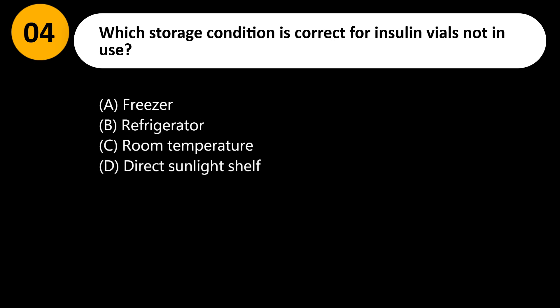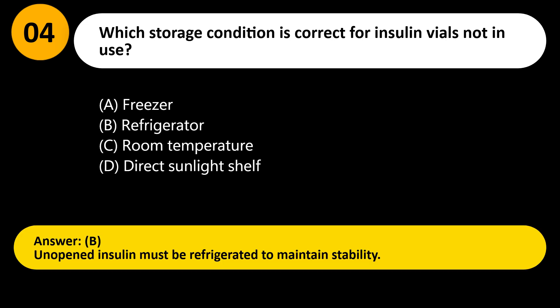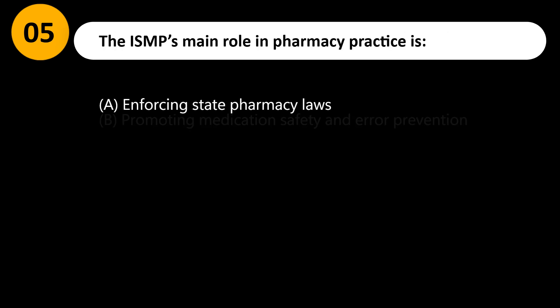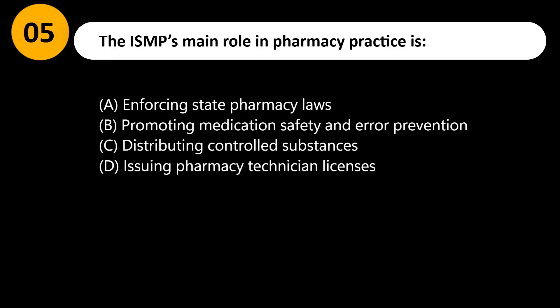Which storage condition is correct for insulin vials not in use? A) Freezer, B) Refrigerator, C) Room temperature, D) Direct sunlight. Answer: B. Unopened insulin must be refrigerated to maintain stability.